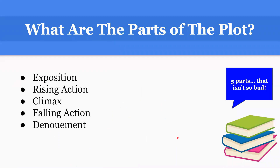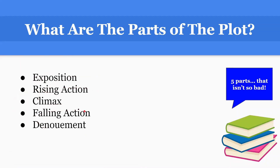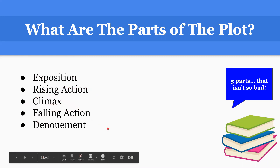So what are the parts of the plot? There are five parts: the exposition, the rising action, the climax, the falling action, and the denouement.